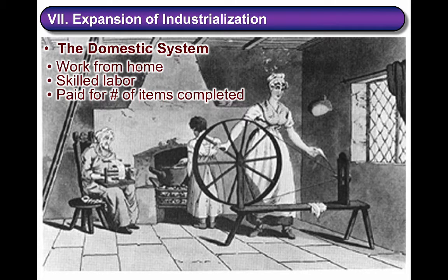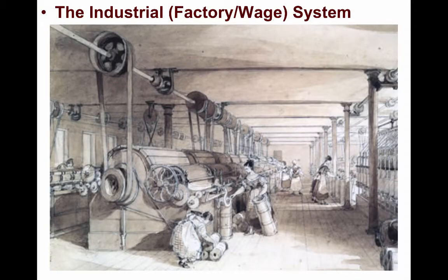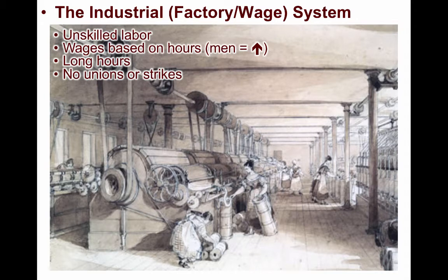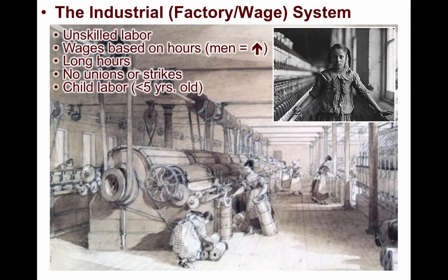With the industrial system, also referred to as the factory or wage system, society and labor were radically changed. The labor was compartmentalized and mostly consisted of unskilled labor that was much cheaper. Wages were based on the number of hours you worked, and men almost always received higher wages. They typically worked very long hours, from 12 to as many as 16 hours in a day, and this was for 6 days a week. Conditions were sometimes unsafe, and there was initially no insurance if you were injured on the job. Unions and strikes were initially outlawed, and child labor was legal, with children as young as 5 years old working in factories or mines.